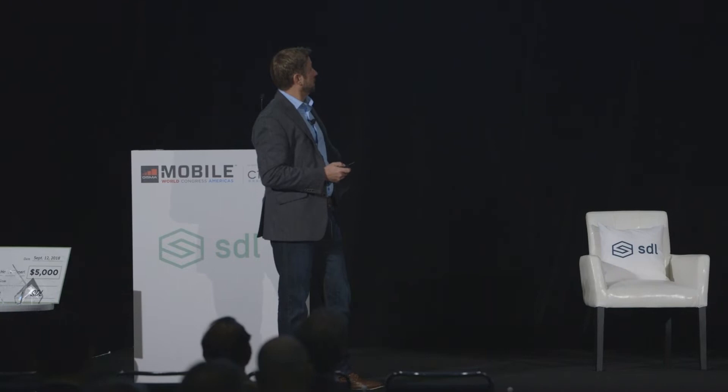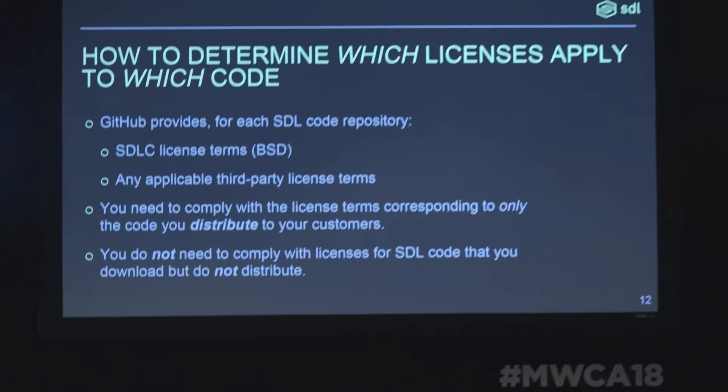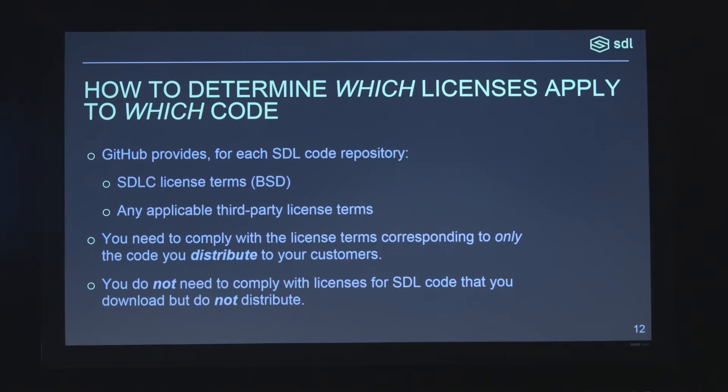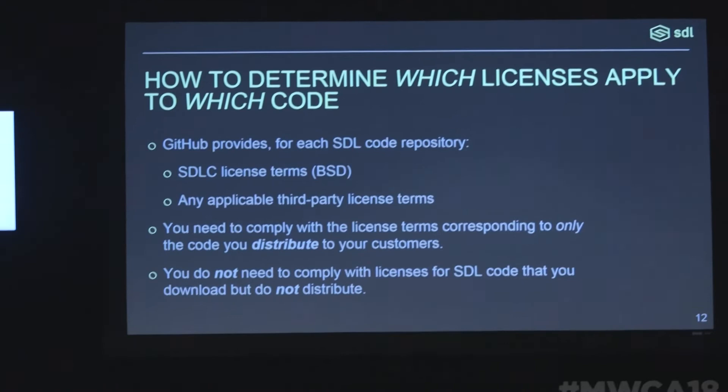I covered a lot of different licenses, but I didn't tell you which ones go with which code. The SDLC and its project maintainer have taken steps so that on GitHub, for each project within SDL, there's a traditional license file that tells you what licenses apply. If you were merely downloading the code from GitHub and using it internally on a bench-top development or an IDE, and it's not part of what you're actually sending out the door, don't worry about it. But if you download code that goes into your app or your core and it goes out the door, then you have to comply. You need to know which licenses you're dealing with and which ones are in the code base that you're sending out the door.